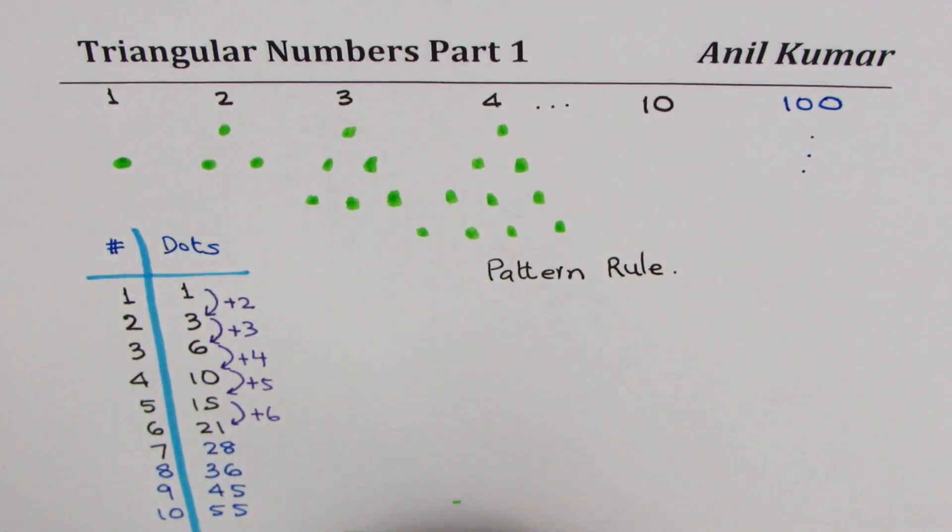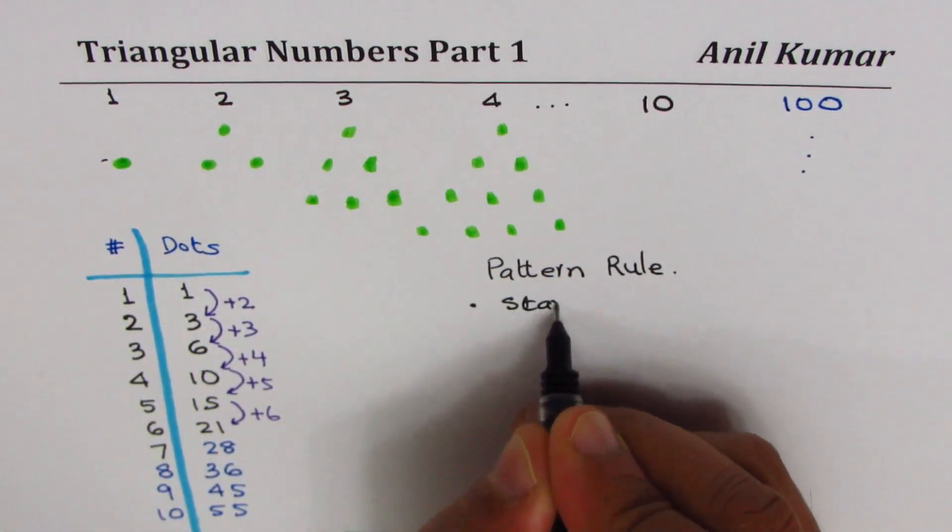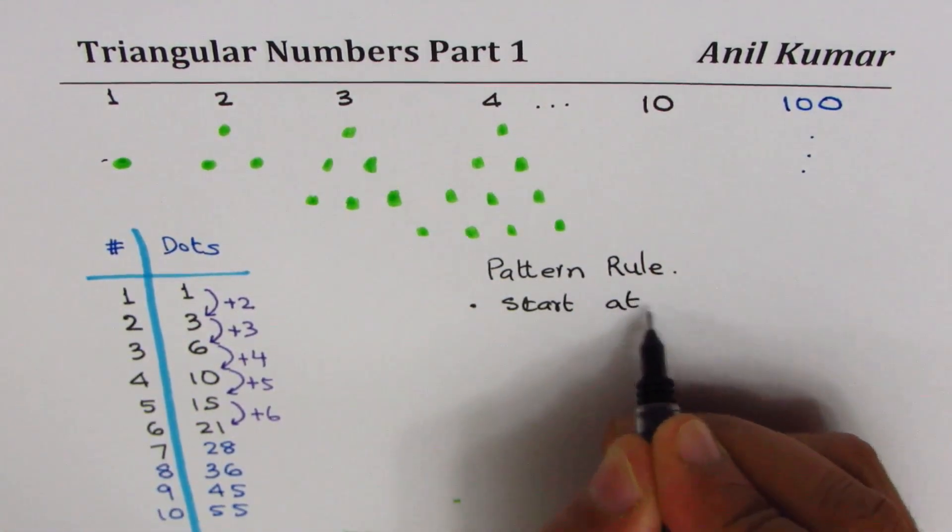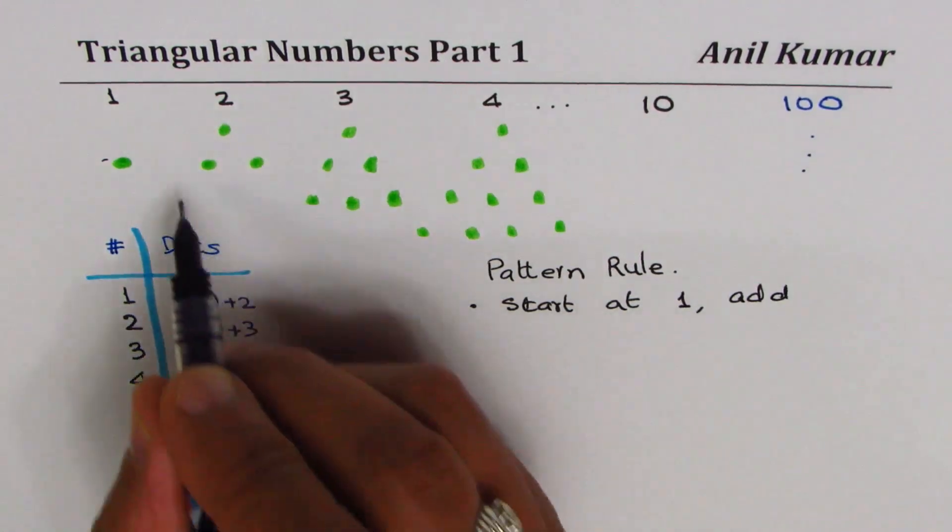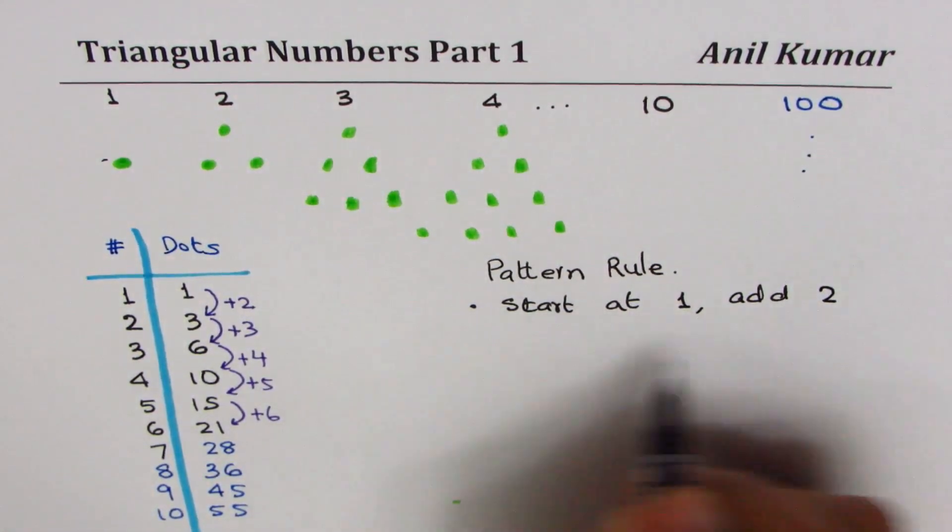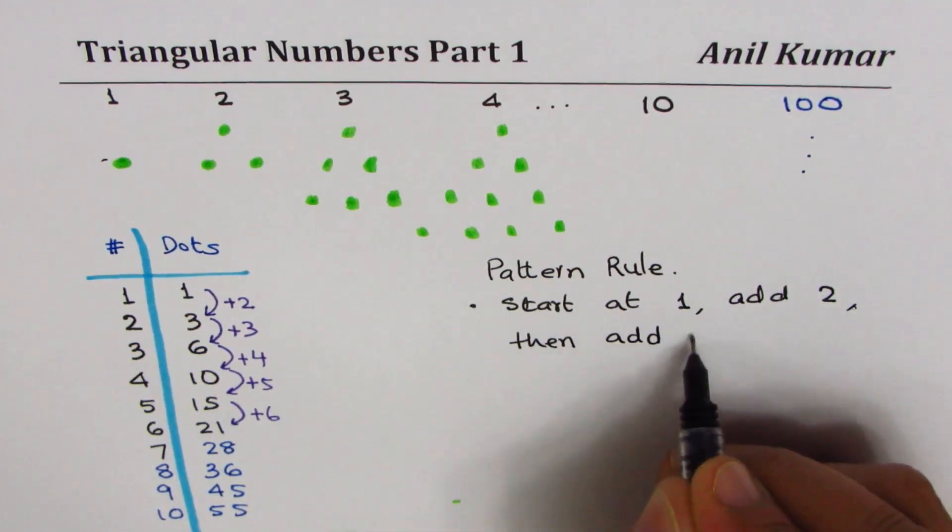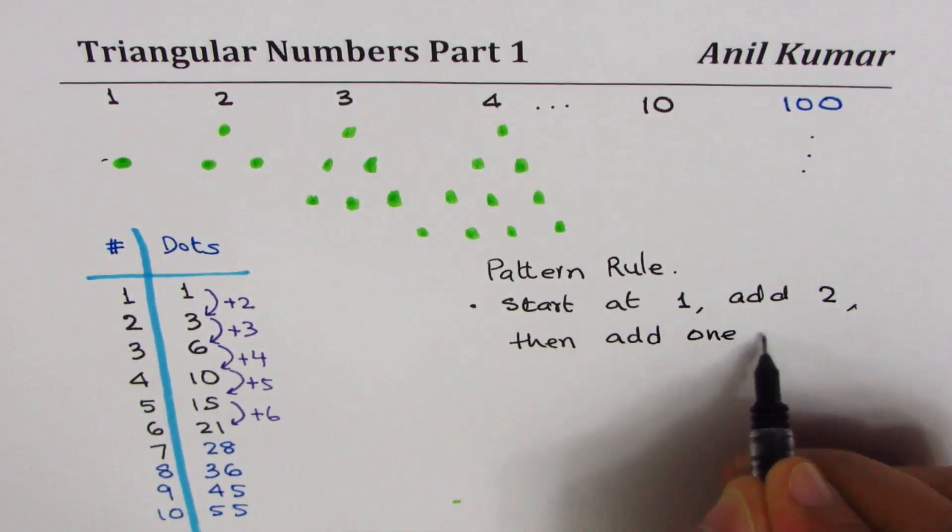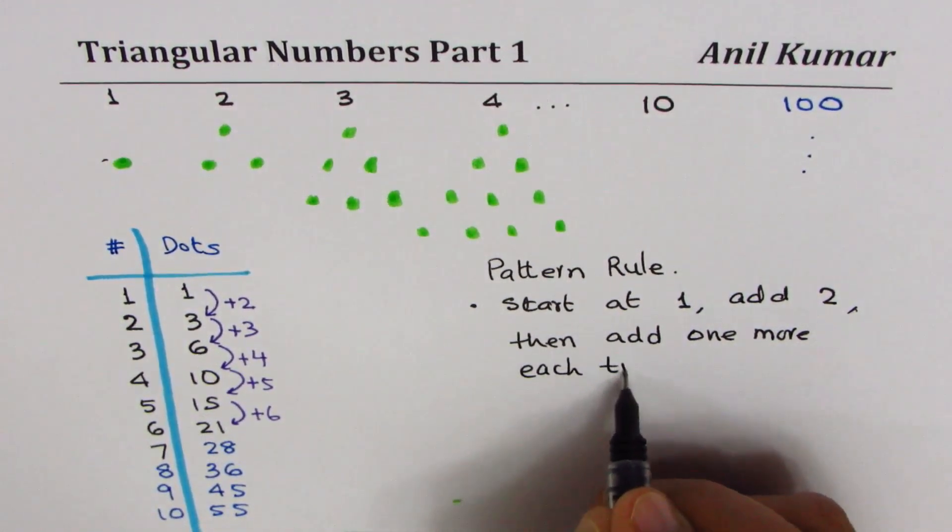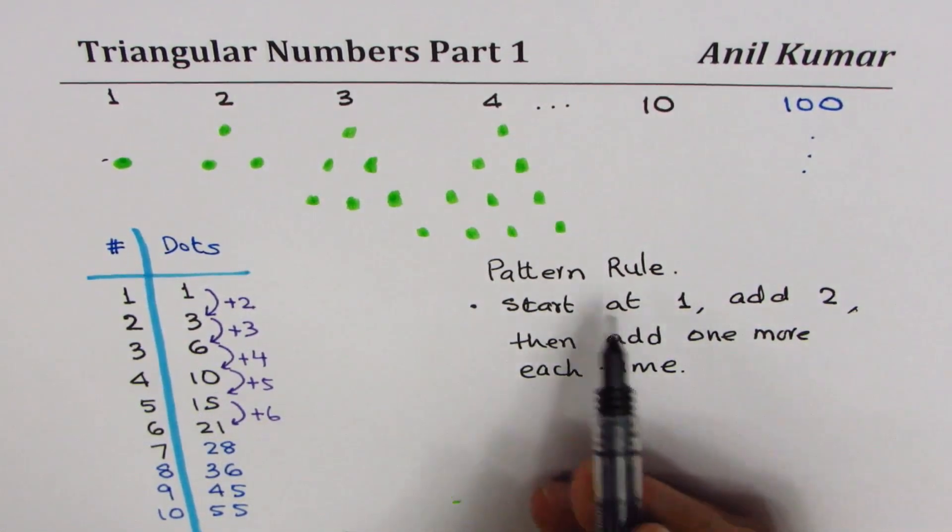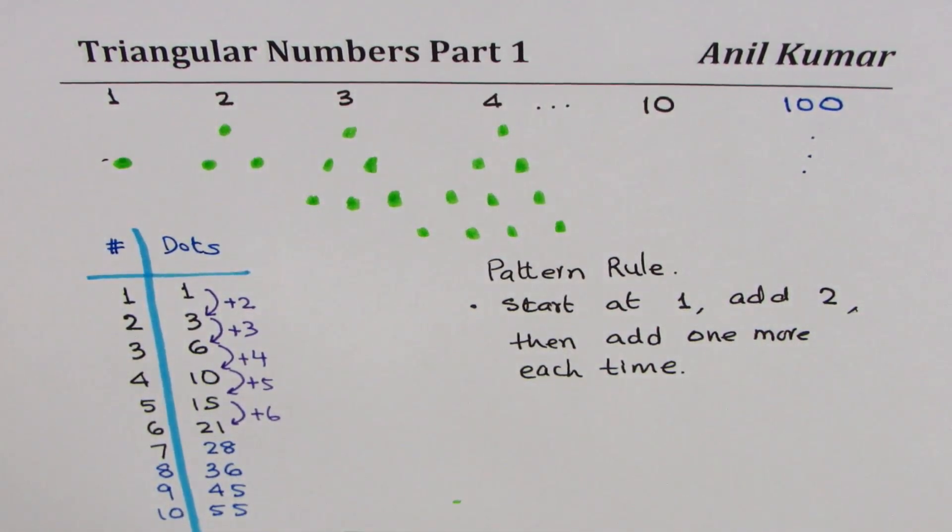What kind of rule can we have? One way of writing the rule is start at one, add two, and then add one more each time. So you could write this as your pattern rule. But this pattern rule helps you to make a table like we were trying to make earlier.